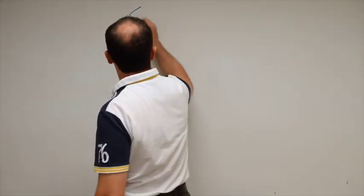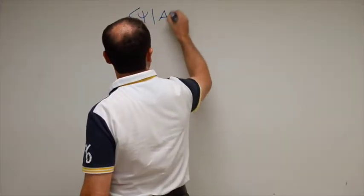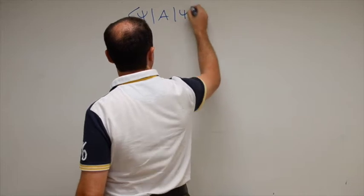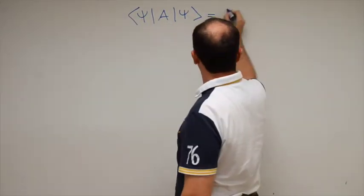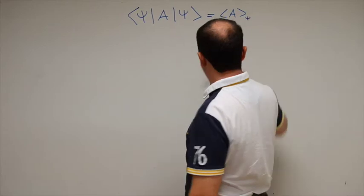I suppose that you know what a pure quantum state is, so let us start with something you should know: namely, that the average value of an operator on a pure state is estimated in quantum theory by this expression. This is the expectation value of A in state Psi.